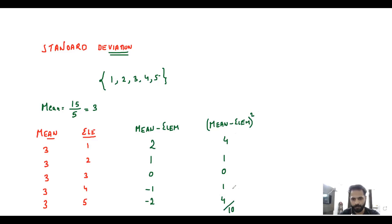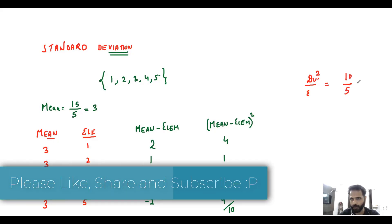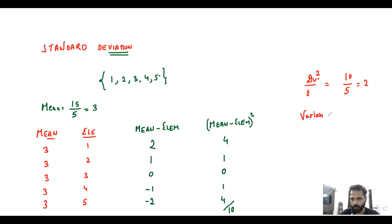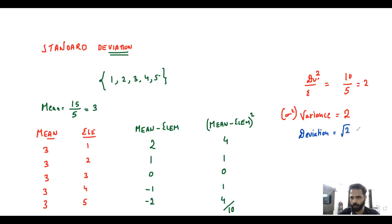These are the squares of the deviations. Add them up: you get 10. Now, deviation square per element — be careful, we have squared up — so we are calculating deviation square: 10 divided by 5 equals 2. This is called the variance. Variance equals 2, given by sigma squared. Variance is the square of the deviation per element. Now, what is the standard deviation? Since you squared it up, take the square root again: square root of 2, which is 1.414. That is your standard deviation, given by sigma. Standard deviation is the square root of variance.